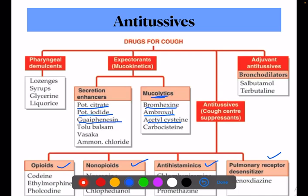Pharyngeal demulcents include lozenges, syrups, and glycerin. Adjuvant antitussives are bronchodilators. If bronchodilation happens, mucus can be easily removed. An example is salbutamol.